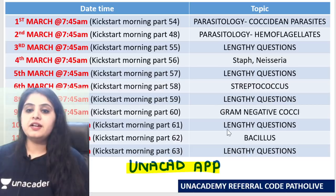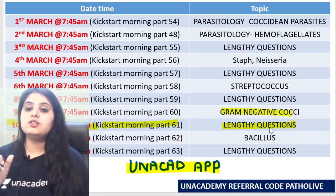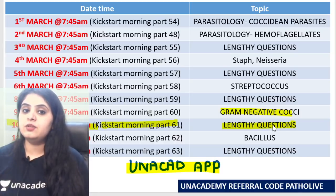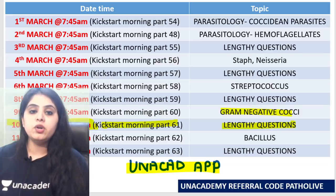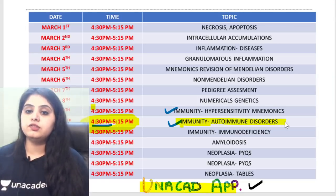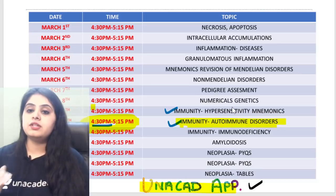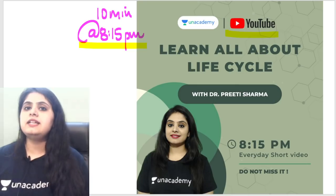All of you are aware of the three events throughout the day. Early morning at 7:45 we discuss for 40 minutes — today we discussed gram-negative cocci. Tomorrow morning we'll discuss lengthy questions in the alternate path micro session. In the evening at 4:30 PM tomorrow we have autoimmune disorders; today we discussed hypersensitivity mnemonics.